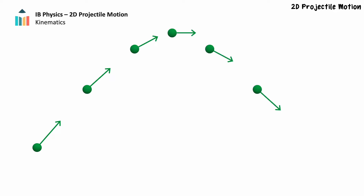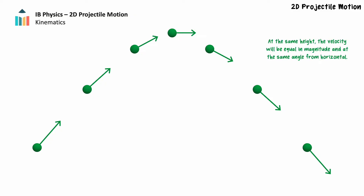We'll begin by exploring the trajectory of two-dimensional projectile motion. Two-dimensional projectiles have both vertical and horizontal motion simultaneously. As with one-dimensional projectile motion, two-dimensional projectiles have symmetrical trajectories. This means that at equal heights the magnitude of the projectile's velocity will be the same, and its angle from horizontal will be the same.